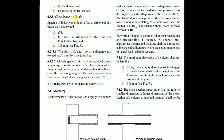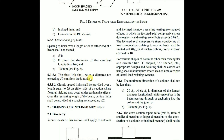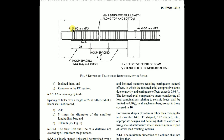For close spacing of links, the spacing of links over a length of 2d at either end of a beam shall not exceed the minimum of: d/4, 8 times the diameter of the smallest longitudinal bar, or 100 mm. As shown in figure 6, this 2d zone applies at both ends of the beam. The first link shall be placed at a distance not exceeding 50 mm from the joint face.